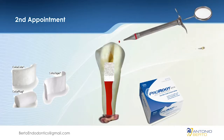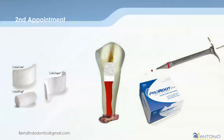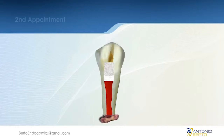That's how we deliver MTA in a very controlled environment. Finally, we're going to restore the tooth. We can put a thin layer of glass ionomer so we don't have to wash out the MTA, and over the glass ionomer we'll place our resin or amalgam restoration.